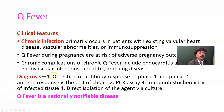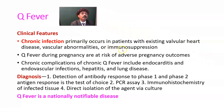Regarding chronic Q-fever clinical features, chronic infection primarily occurs in patients with existing valvular heart disease, vascular abnormalities, or immunosuppression — such as those taking steroids, chemotherapeutic drugs, or with uncontrolled diabetes mellitus. Q-fever during pregnancy carries a risk of adverse pregnancy outcomes, as it can cross the placenta and may damage the fetus or embryo. Chronic complications include endocarditis, endovascular infection, hepatitis, and lung disease.